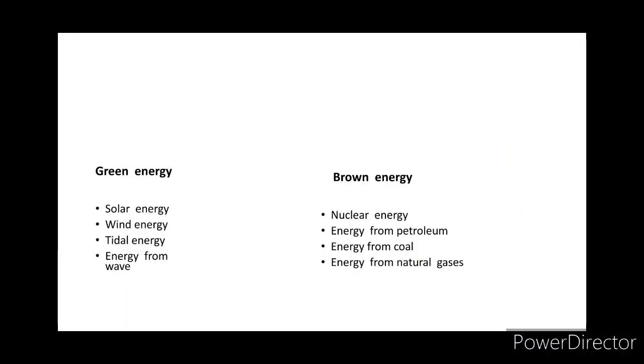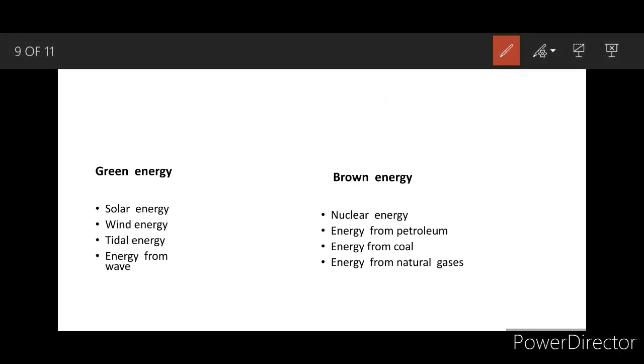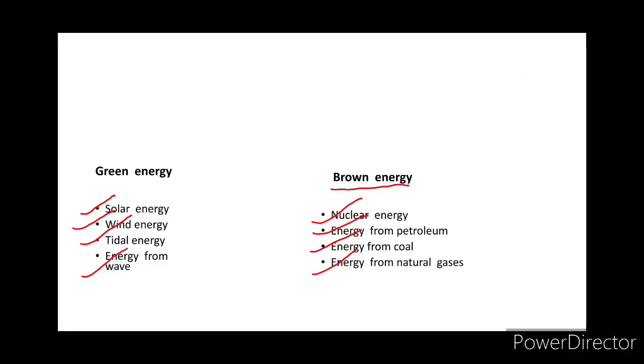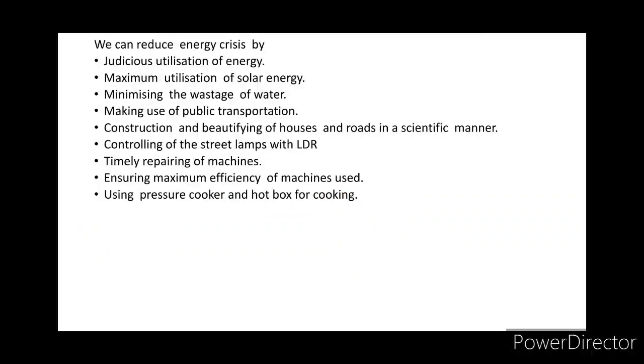We can see green energy. Examples for green energy and brown energy: Solar energy, wind energy, tidal energy are green energy. Brown energy are nuclear energy, energy from petroleum, energy from coal, energy from natural gases, etc. are examples for brown energy.